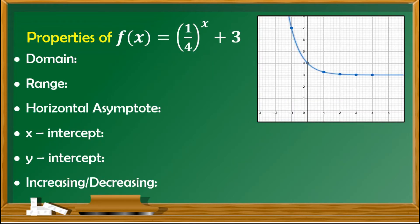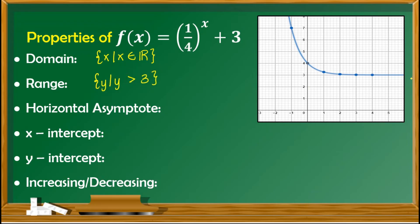Next is to find the properties of this function. We can base it on the graph or on the general properties. As for the domain of an exponential function, it is always the set of real numbers. For the range, since we have plus 3, the value of h is 3, so the range is the set of y such that y is greater than 3. Checking on the graph, it is true that all values of y are found above 3.